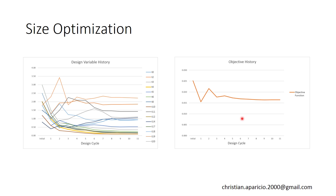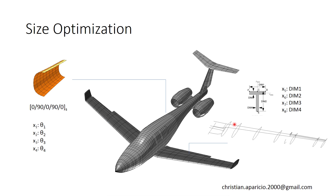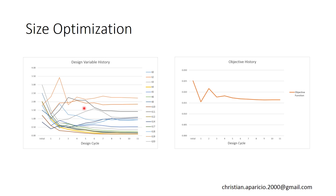So again, with size optimization, we're taking the structural dimensions of the elements — they can even be material properties, and the list is very long, actually. You can set those as design variables, and MSC Nastran will optimize those for you.